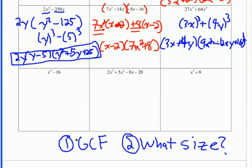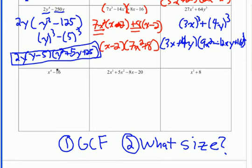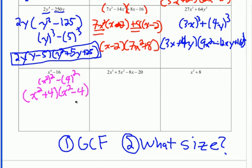There is no GCF here. It's a binomial, and I see subtraction — 16 is a perfect square, so I'm thinking difference of squares. We have x² squared, which is x⁴, minus 4 squared. So it factors into (x² + 4)(x² − 4). Now notice the second parenthesis is still a difference of squares. The first one is a sum so it won't change, but the second factors further into (x + 2)(x − 2). Don't forget the x² + 4. Always check those binomials at the end to make sure you factor fully.